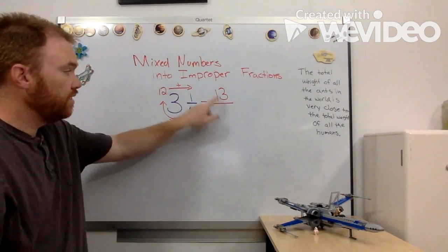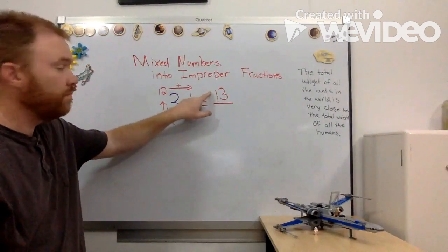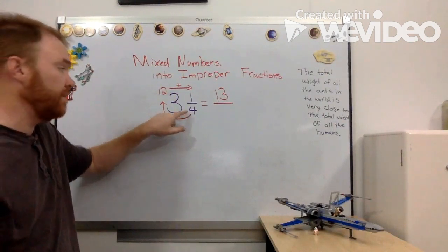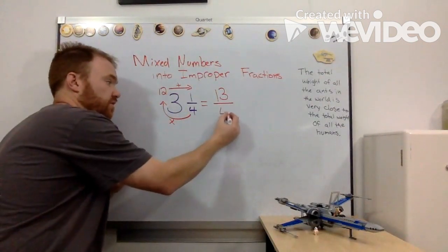Now 13 is my new numerator. My denominator is just going to stay the same as my denominator over in my mixed number. So it's going to be 13 fourths.